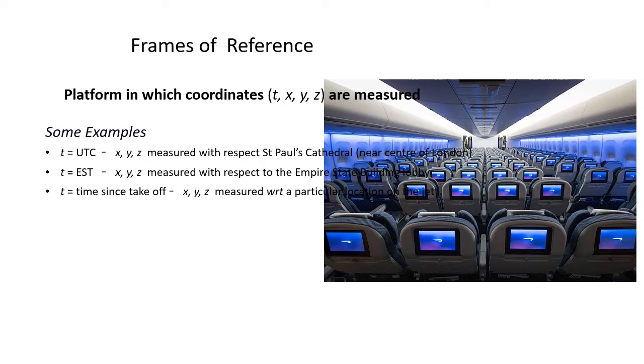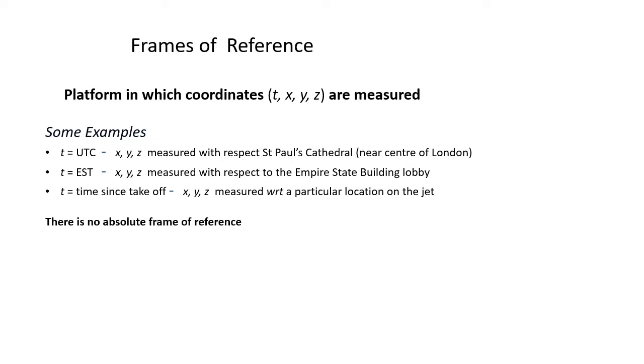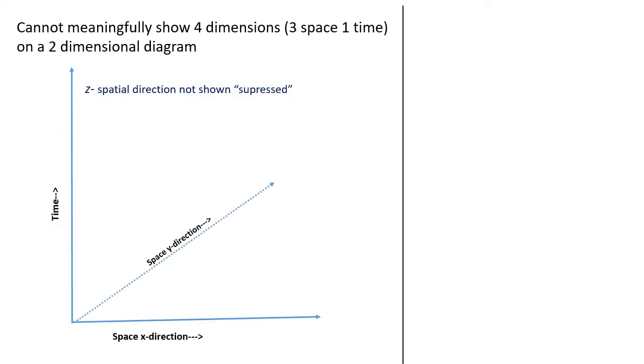As viewers of my previous video on special relativity will know, there is no absolute frame of reference. If we want to draw the path of an object through spacetime, we can't really draw three dimensions of space and one dimension of time on a flat piece of paper. So, in order to simplify things, we suppress one or two of the space dimensions.